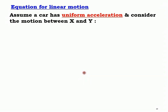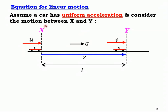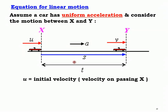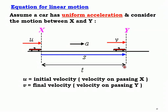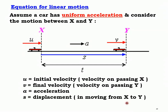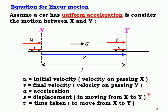Assuming a car has uniform acceleration, and considering the motion between points X and Y: at X the car has initial velocity u, at Y it has final velocity v. The car accelerates at acceleration a over a displacement s, and the time taken for the change is t. So u is the initial velocity at X, v is the final velocity at Y, a is the acceleration, s is the displacement from X to Y, and t is the time taken.